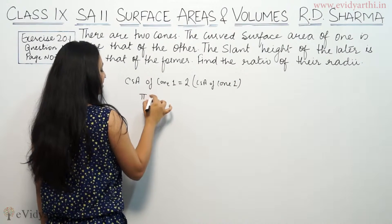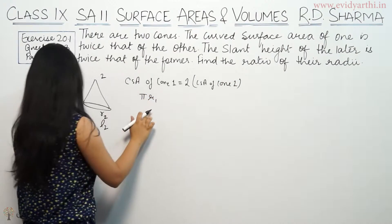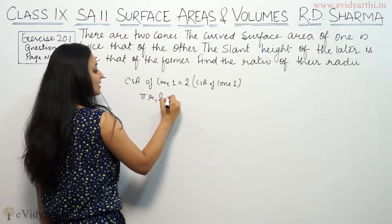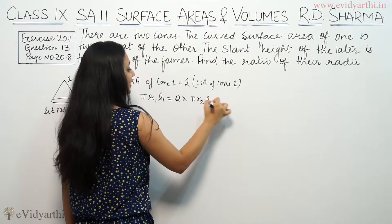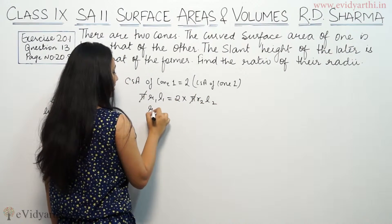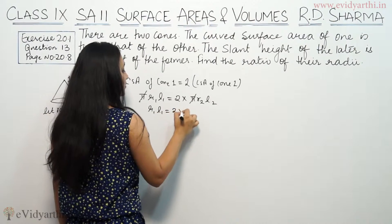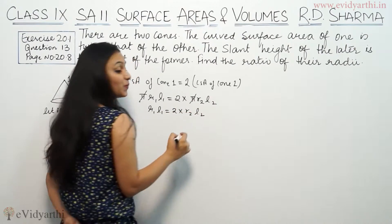So CSA is π RL. So π into R1 because radius is R1 and slant height is L1. So 2 into π R2 into L2. So π se π cancel ho gaya, we have R1 L1 equals twice of R2 L2.